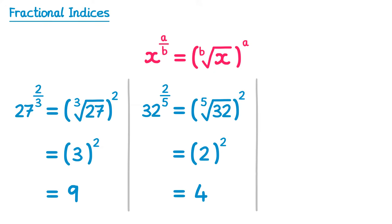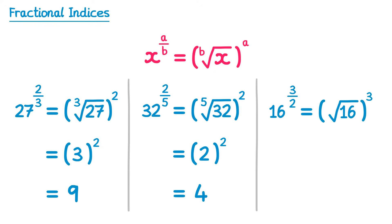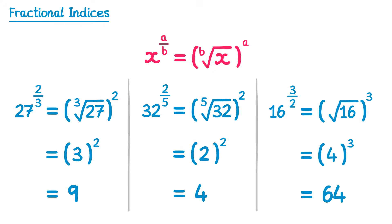Let's try one more: 16 to the power 3 over 2. Since we have a 2 on the bottom we do the square root of 16, and then since we have a 3 on the top, we cube the result. The square root of 16 is 4, so we've got 4 cubed — 4 times 4 times 4 — which is 64. So whenever you have a fractional index like this, the bottom number tells you which root to do, and the top number tells you what power to raise it to afterwards.